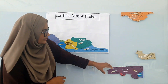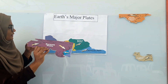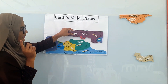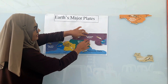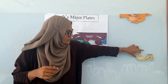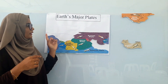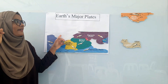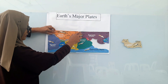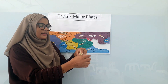Then, which plate is this? Eurasia plate. Yes! Where will this fit? It fits here. So we have remaining two plates: the Australian plate and North American plate. North America plate will fit here, and the remaining is the Australia plate.